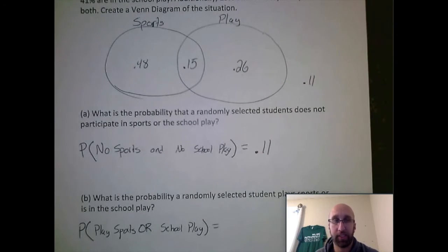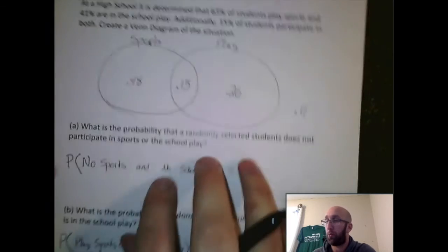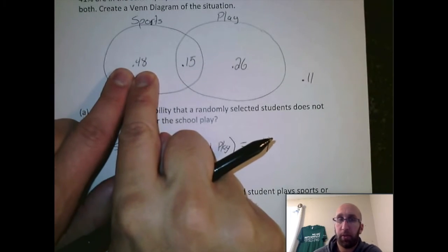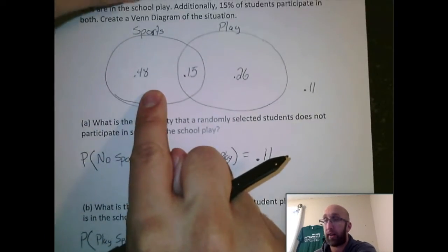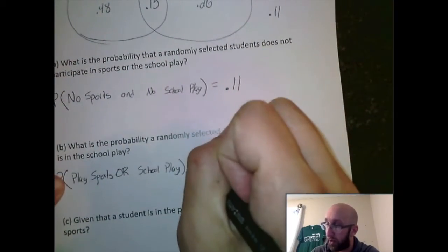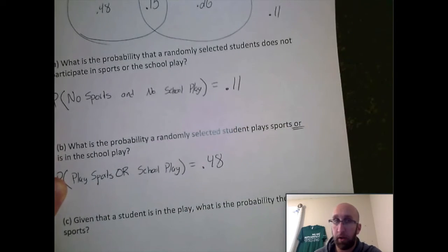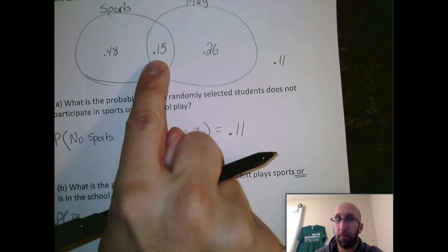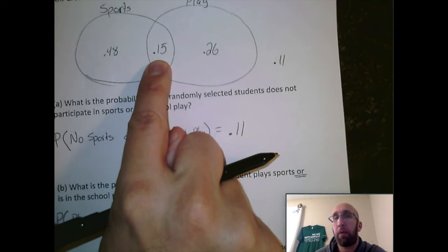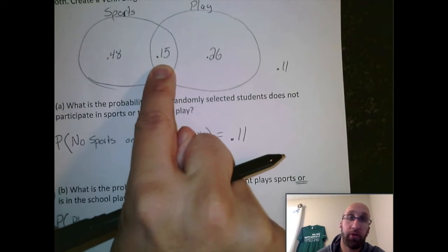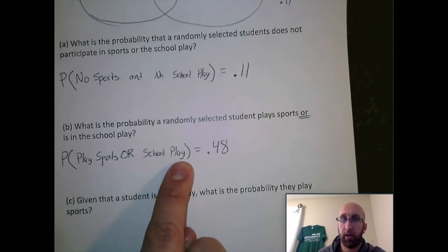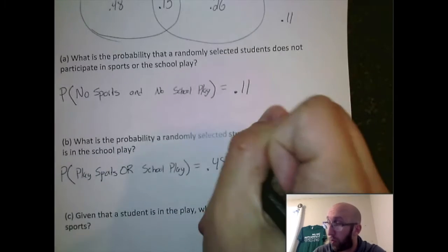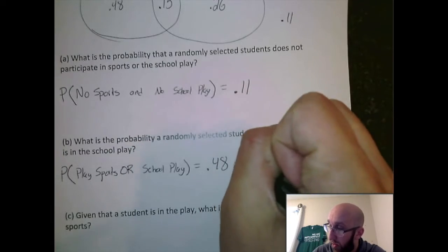So we need to add up all the instances that are either sports or school play. As we work through here, first number we see is .48. This represents students that play sports, so that is included in our probability. I'm going to take that .48, put it down here in the bottom. This next number, .15, represents students that do sports and the school play. So when you ask the question, do they do sports or the school play? Yeah, in fact, they do both. So we're going to add that .15.